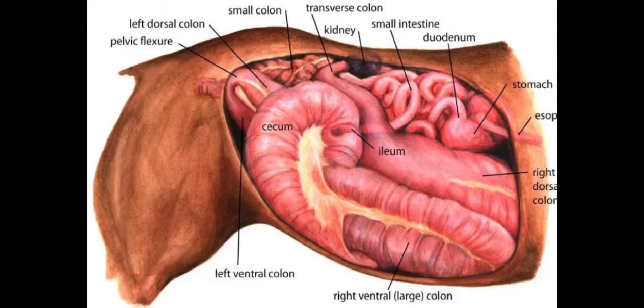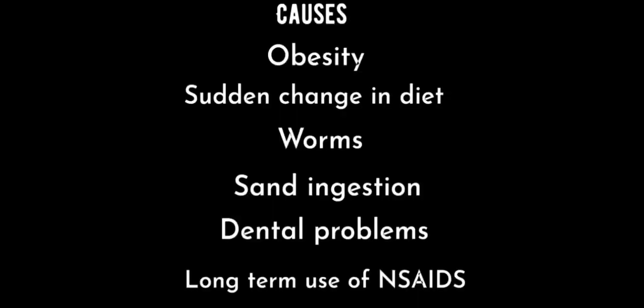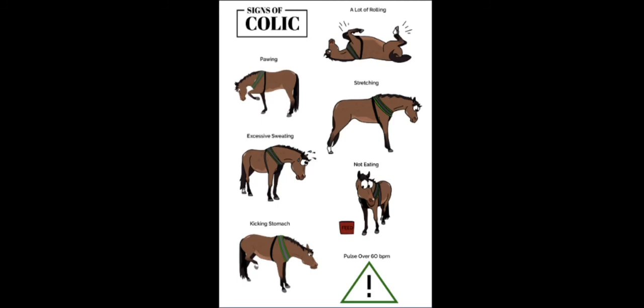Number ten: colic. Colic is severe abdominal pain from a blockage or knot in the intestines and generally results in death if untreated. There are many reasons for your horse to colic, but some of the most common are: obesity, sudden change in diet or routine, worms, sand ingestion, stress, dental problems, and long-term use of NSAIDs. Symptoms include pawing at the stomach, bloating, sweating, rolling, distress, loss of appetite or need for water, peculiar positions such as sitting and stretching, and absence of gut sounds.